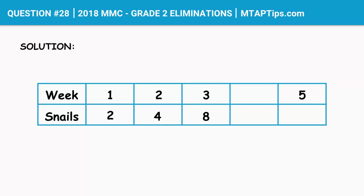To be able to know that, we first need to know how many snails she will have in the fourth week. And if you notice, every week the number of snails gets duplicated. When we say duplicated, we just have to multiply the number of snails by 2.